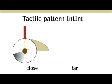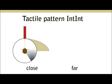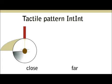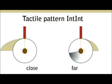The fourth pattern indicates a turn to the right by starting the vibration at the top and increasing the intensity until the desired direction is reached. If the turn lies to the left, intensity decreases until the top. Intensity is used to indicate distance.